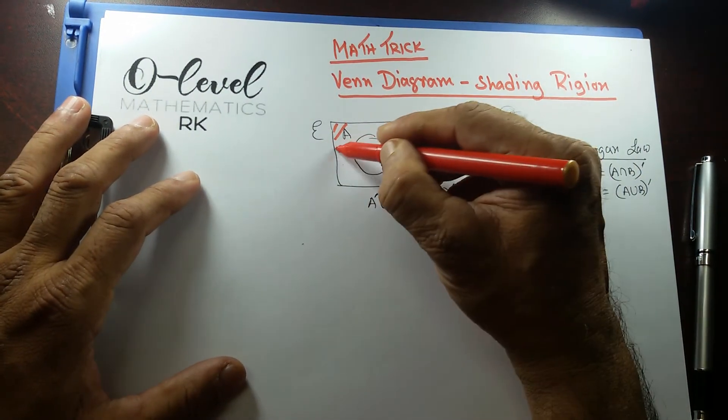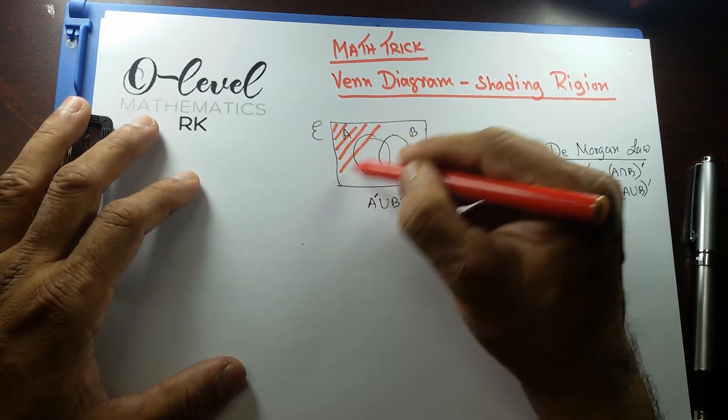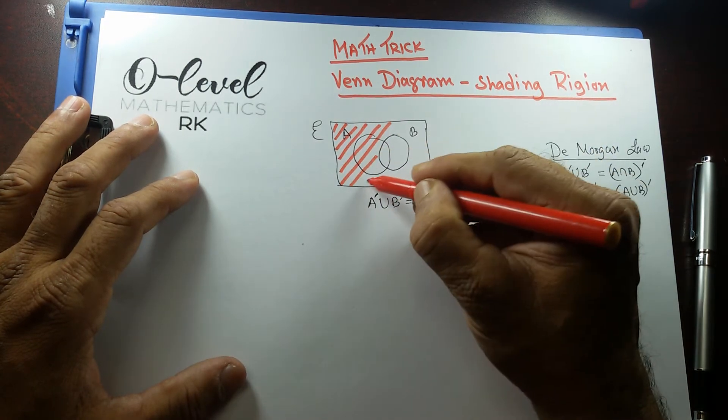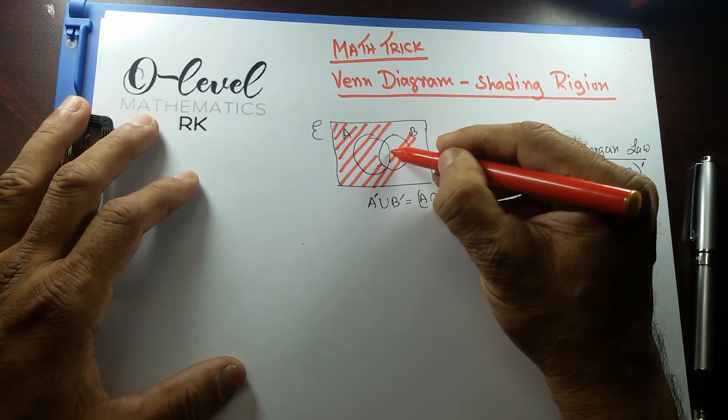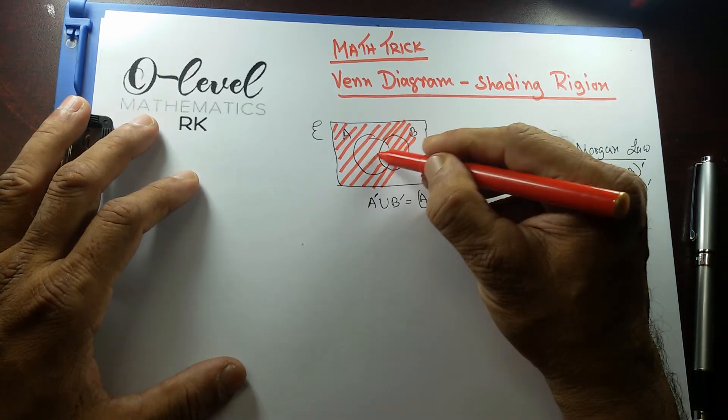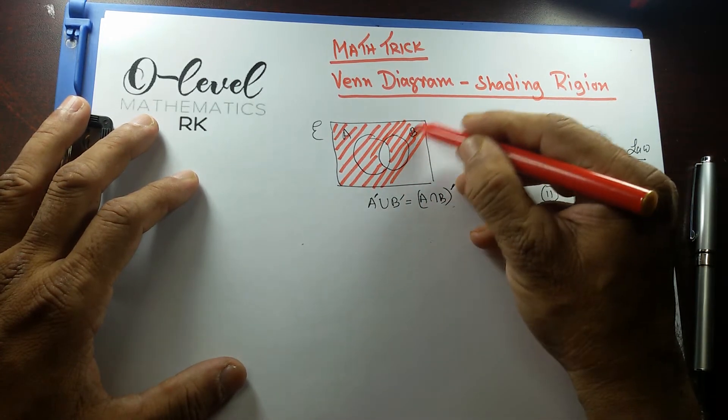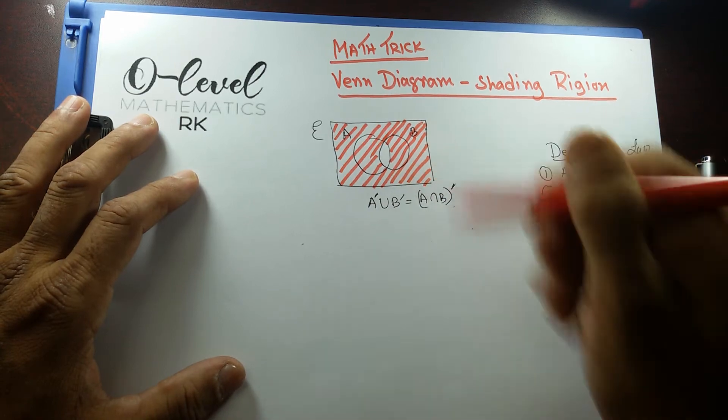So when A intersecting B whole prime, then actually I'm looking at this particular region. This particular region, I'm going to just avoid that region there. So that's that.